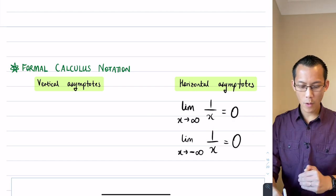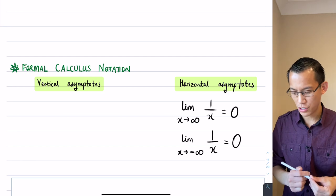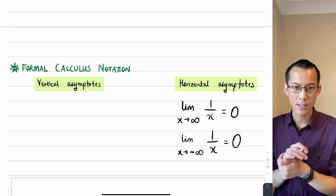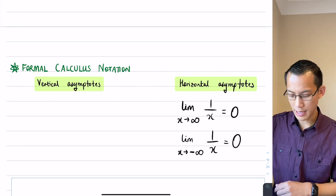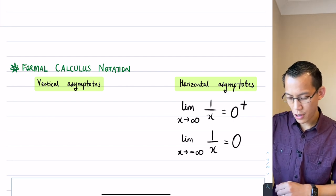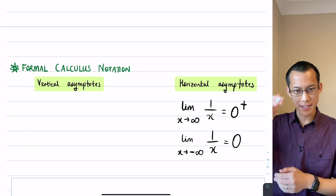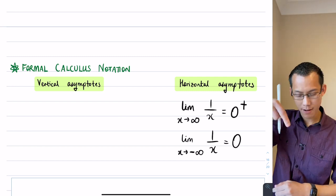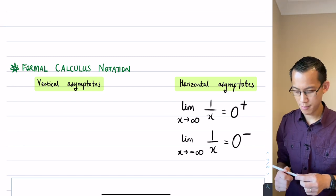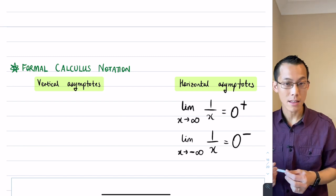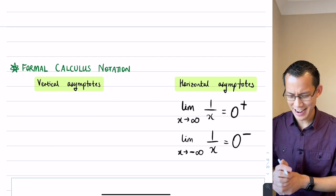But then we also pointed out that you don't approach zero in the same way. When you're approaching from the positive side, you're approaching from the top — you drop down. When you're approaching from the negative side, you're going up. The way we denote that — and this is slightly weird notation which some of you have seen — we write a plus here to say you're coming from the top going down, and then for the other one we say we approach it from the negative direction, from below.